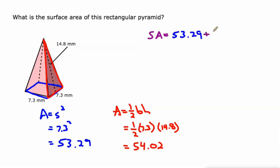And we have four of the triangles—the right, the left, the front, and the back—so four of those 54.02s.